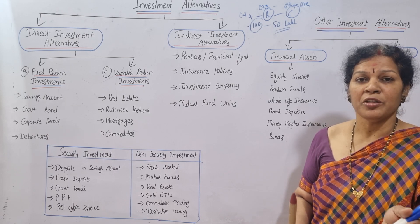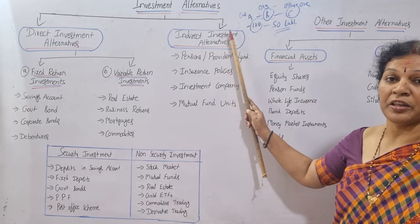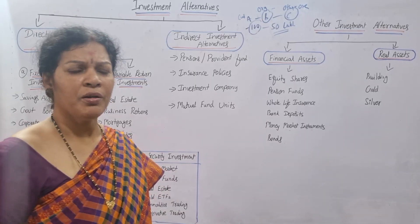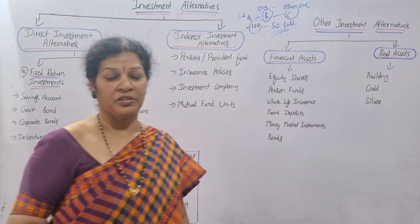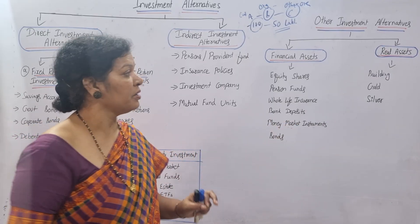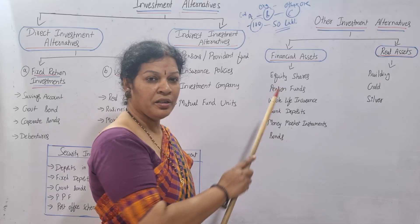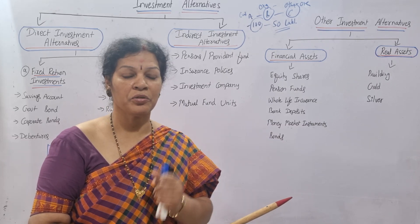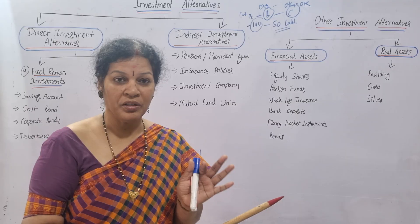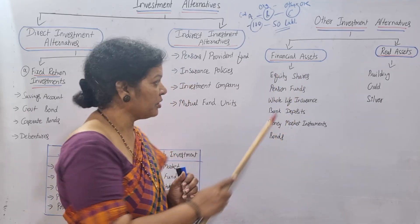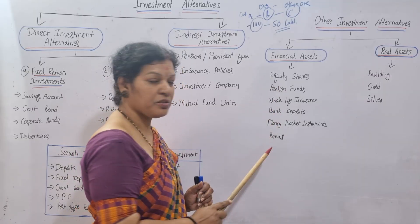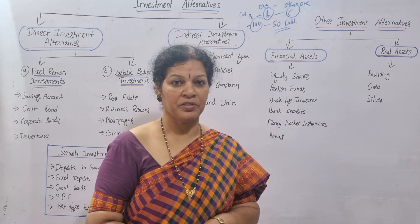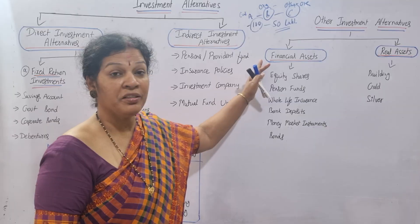There are also other investment alternatives beyond direct and indirect. One is financial assets versus real assets. Financial assets means investments related to the stock market or financial institutions — from a finance point of view only. Examples include equity shares, pension funds, whole life insurance, bank deposits, money market instruments, and bonds. These are all related to finance companies and stock exchanges, so we call them financial assets.